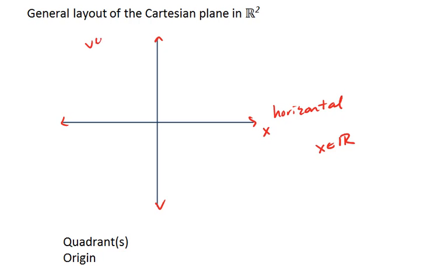We then have our vertical axis, which is y usually, and y is also a real number. So what ends up is that we get a real number by a real number, and we say that the Cartesian plane is an R squared.